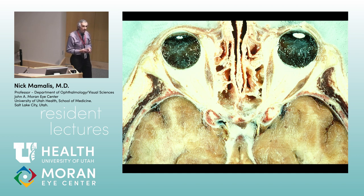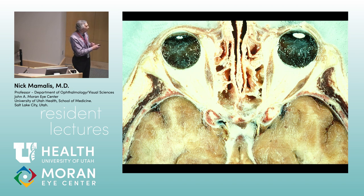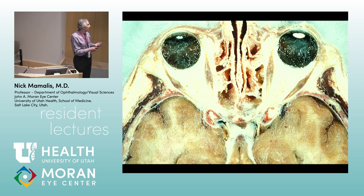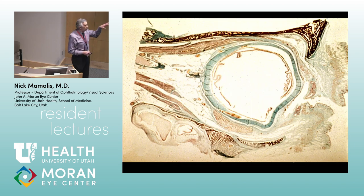What's in the extraconal space? Really not a whole lot — a lot of fat, not much else. The subperiosteal space is a potential space. Because you've got sinuses right next to the orbit — below it you've got the maxillary, you've got the ethmoids, you've got the frontal above — if you have an infection or a tumor in there, you can get invasion into the orbit from the sinuses. The subperiosteal space can fill with blood, pus, or inflammatory cells.